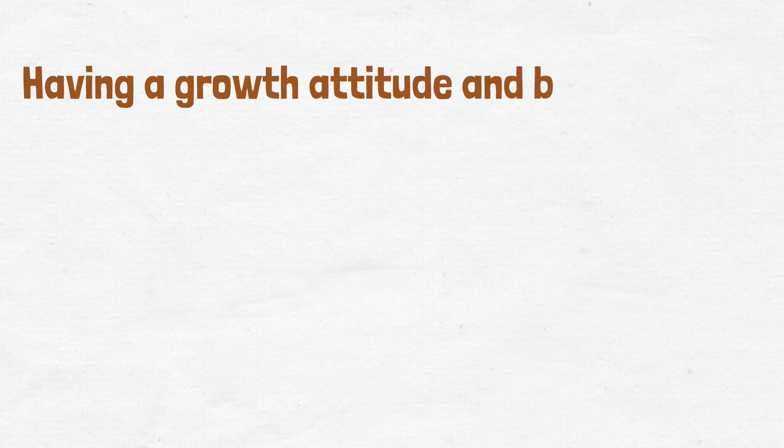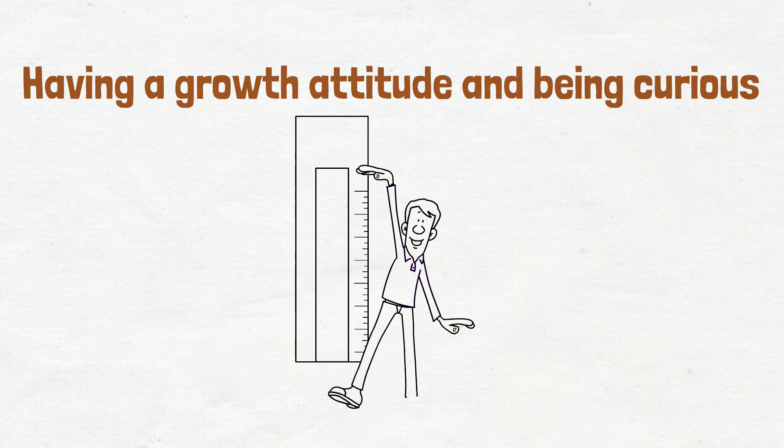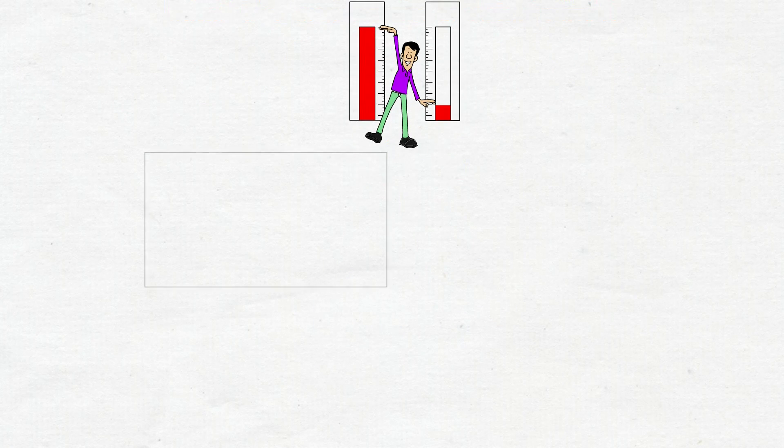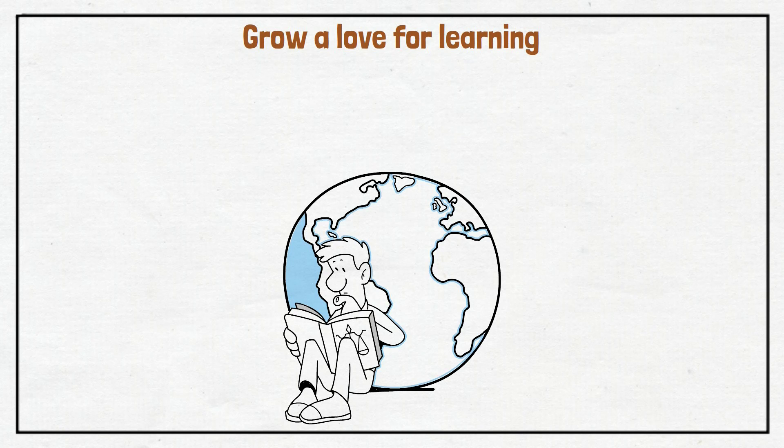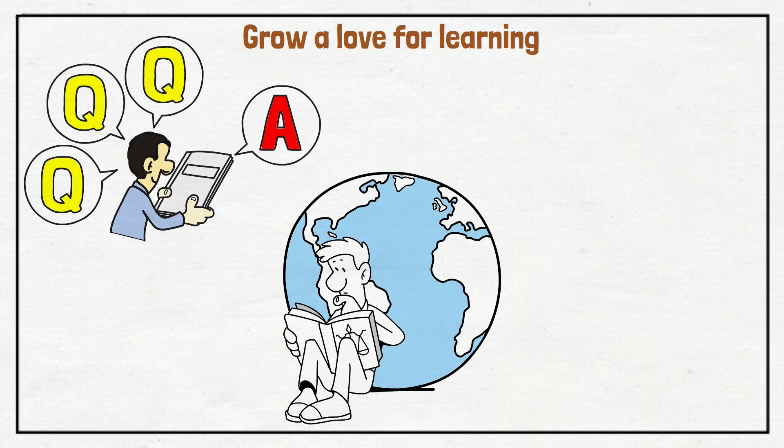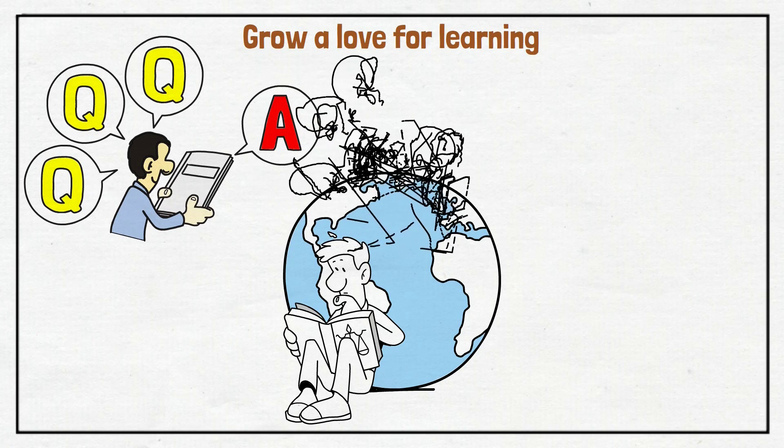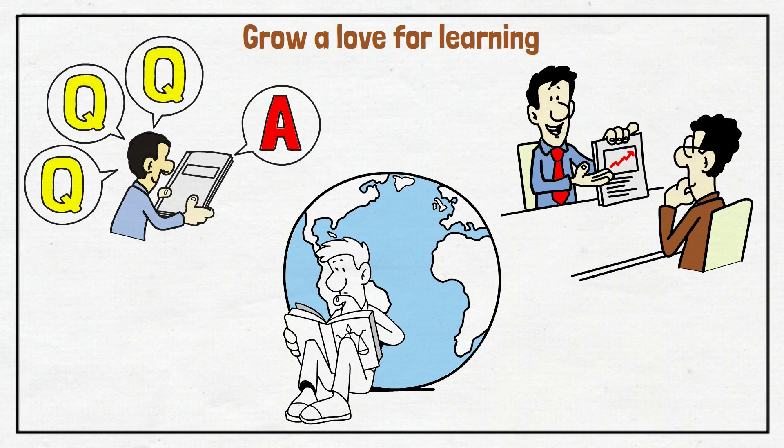Now, let's look at the part about having a growth attitude and being curious. People who are always interested in learning and have a growth mindset are naturally attractive. So, let's find the three habits that help people get smarter. The first habit is to grow a love for learning. Try out new things, learn about different things, and stay interested in the world around you. If you keep pushing yourself to learn new things, you'll become a fascinating person who is always ready to share ideas and have talks that make you think.